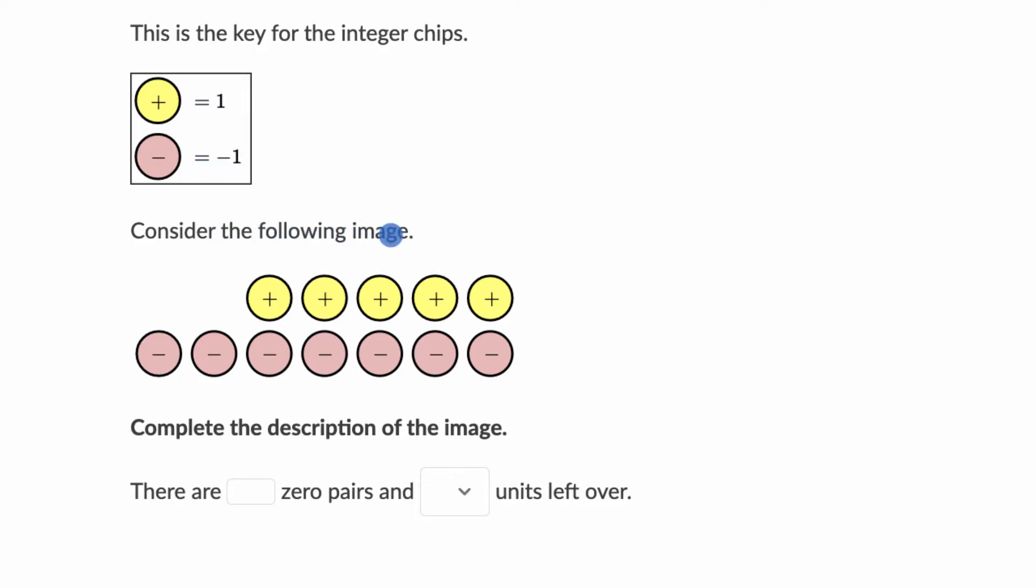Consider the following image. And so we have a bunch of the positive yellow circles and then we have even more of the pink or peach looking negative circles. Complete the description of the image. There are blank zero pairs and blank units left over.